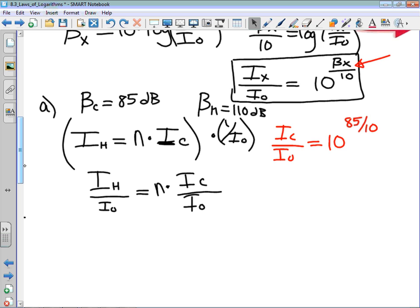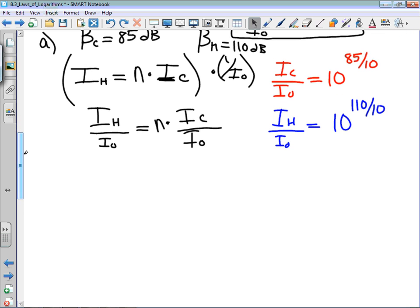We're going to do the same thing for the headphones. The intensity of the headphones over I0 can be written as 10 to the power of 110 divided by 10. Now, what that allows me to do is it allows me to relate these intensities using, and I know they don't look like numbers, but they are.